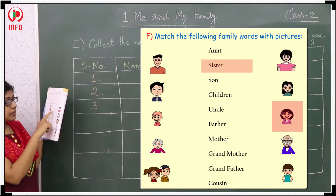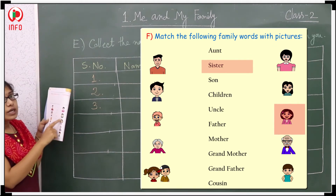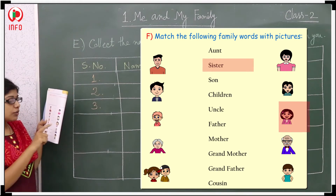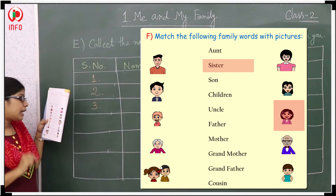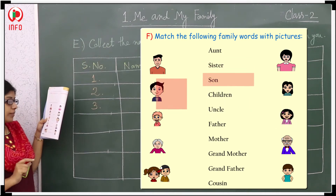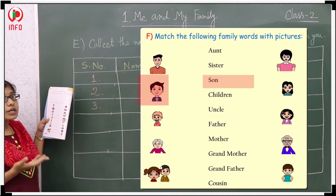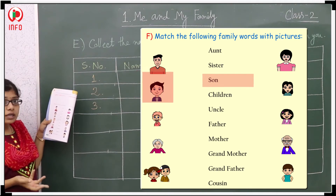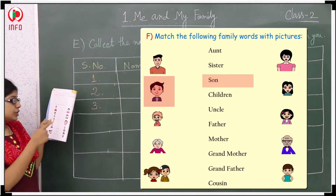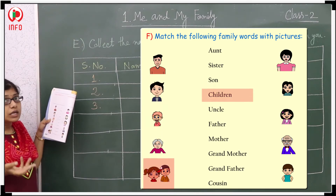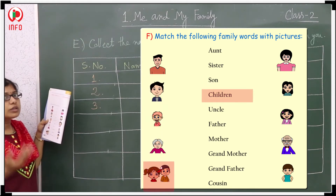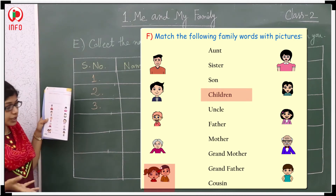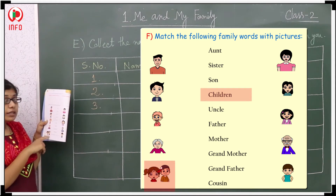Next one the sister. Next the son — which one is the son? See here, he is looking like the son. Next one the children. Children means small child, more than one. See here both of them together — together called children. So these are the children.